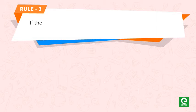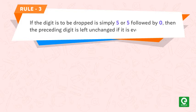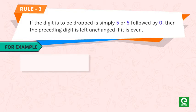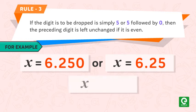Rule number three: if the digit to be dropped is simply five, or five followed by zeros, then the preceding digit is left unchanged if it is even. For example, x = 6.250 or x = 6.25 becomes x = 6.2 after rounding off, which has two significant figures.